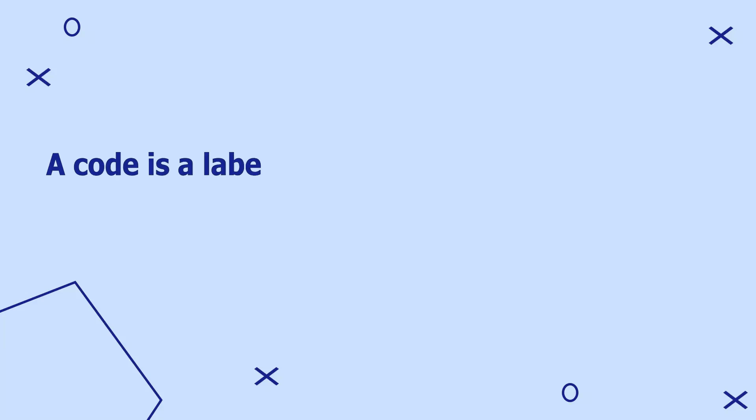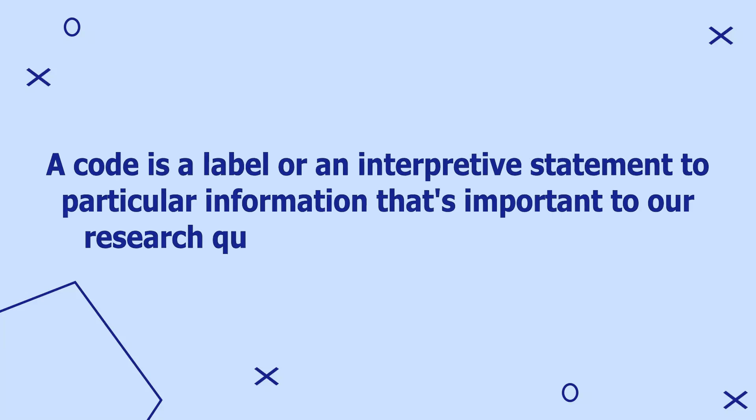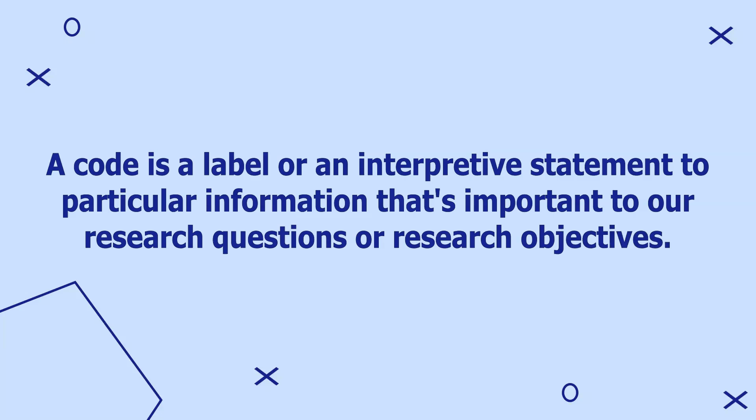We're going to do some coding. Remember, a code is a label or an interpretive statement applied to particular information that's important to our research questions or research objectives. We only code information that's important to our research questions or research objectives.